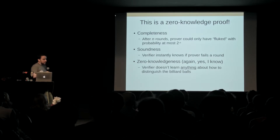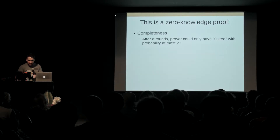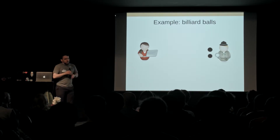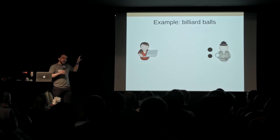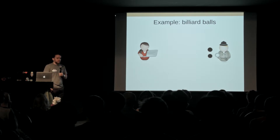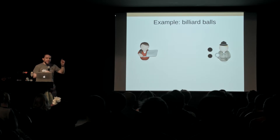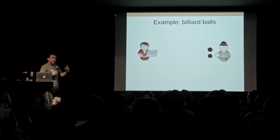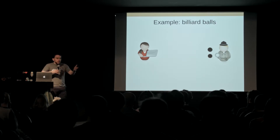Zero-knowledgedness is slightly more complex than that. Bob has gone through the protocol and is convinced Alice knows the balls are different colors. Then Charlie comes along — also colorblind — and wants to know if the balls are different colors. Bob says yes, Alice proved it to me. But that doesn't prove anything to Charlie. Charlie asks why he should believe Bob. Bob says he videoed the whole thing — you can see me swapping or not swapping, you can see Alice can't see what I'm doing, and you can hear her saying whether they swapped or not. Playing the whole video through, you can see she got it right every time.